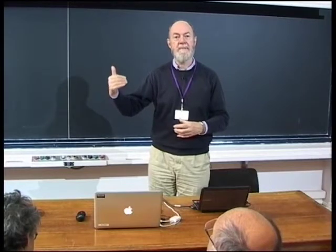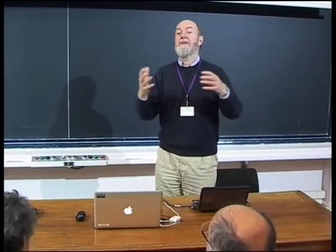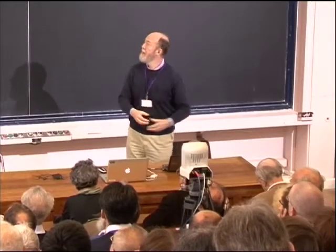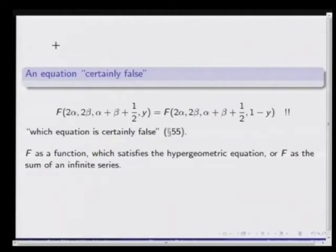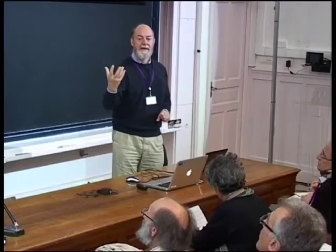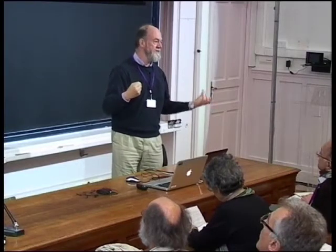Unpublished, and in the same sequence of numbered paragraphs, is the study of the differential equation itself. Here he finds an independent solution from the one before — he has a basis of solutions. He transforms the variable in certain ways, using five elements of a particular group of transformations. He experiments with changing the solution and equation to simplify things, and finds that by formal manipulation you reach an equation which is quite certainly false. This intrigues him, and he explains how this could be: there is a clash between the solution function and the series that represents it in a certain domain.